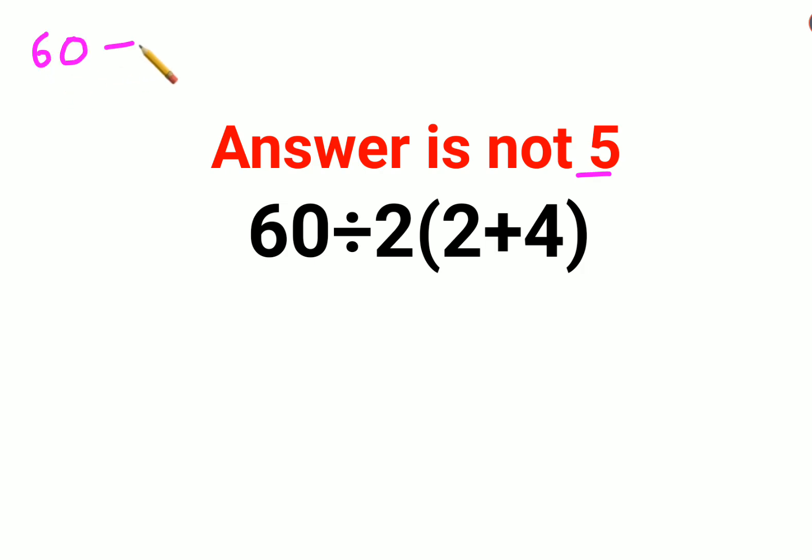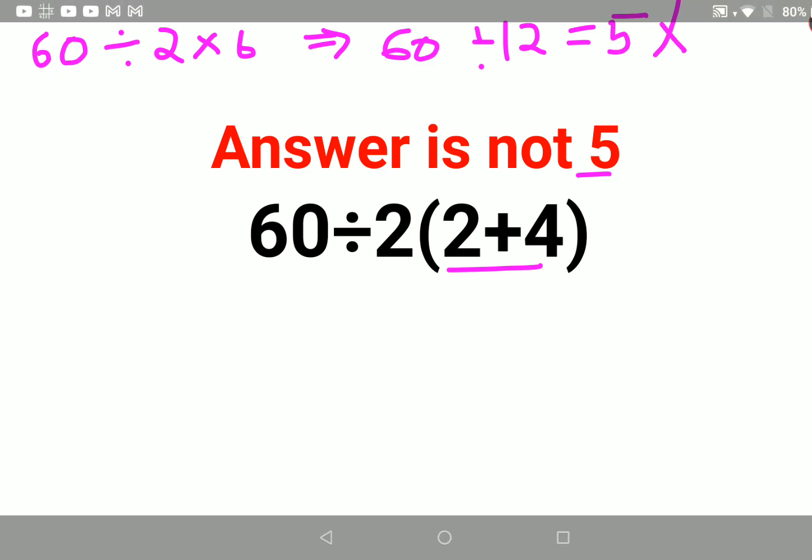So they did 60 divided by 2 and then they did the bracket which is 2 plus 4, that is 6. So they got this as 60 divided by... they did 2 into 6 first. They got it as 12 and then from there they got the answer as 5, which is incorrect.